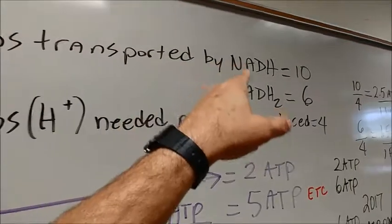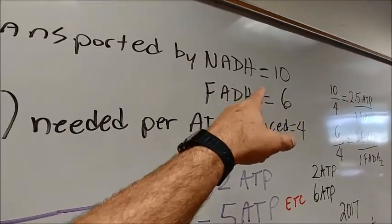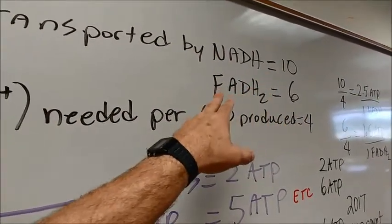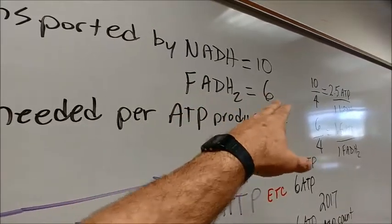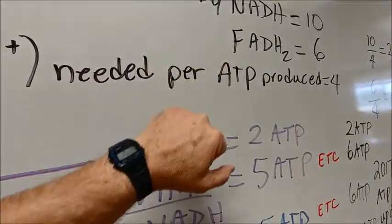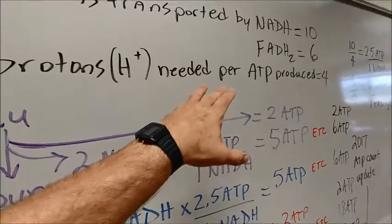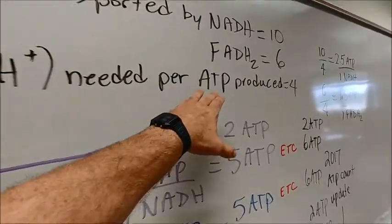is that NADH transports about 10 protons, and then FADH transports 6. So we're talking about niacin and riboflavin. And then it takes 4 protons to generate an ATP.